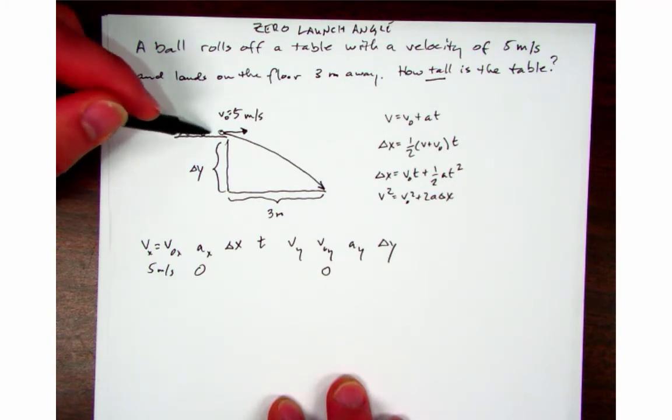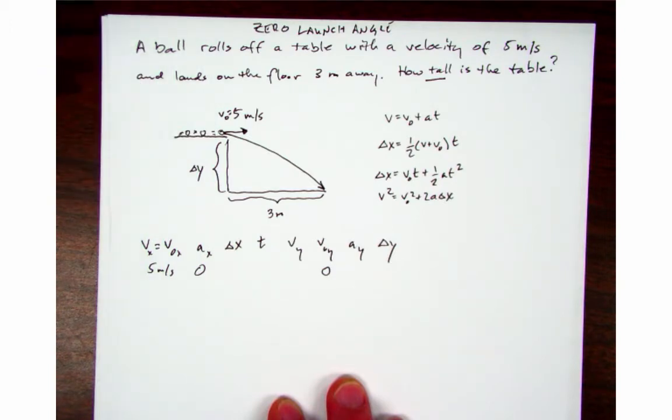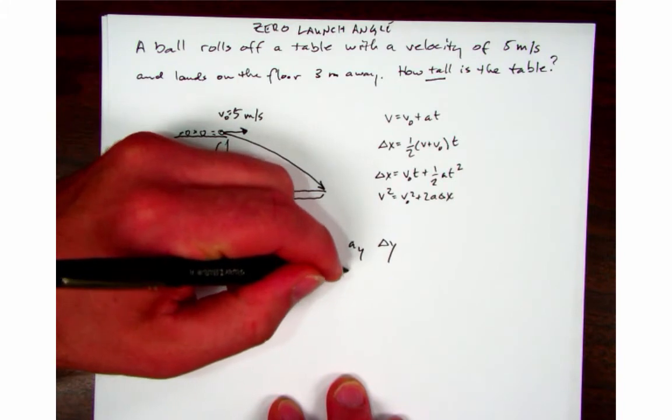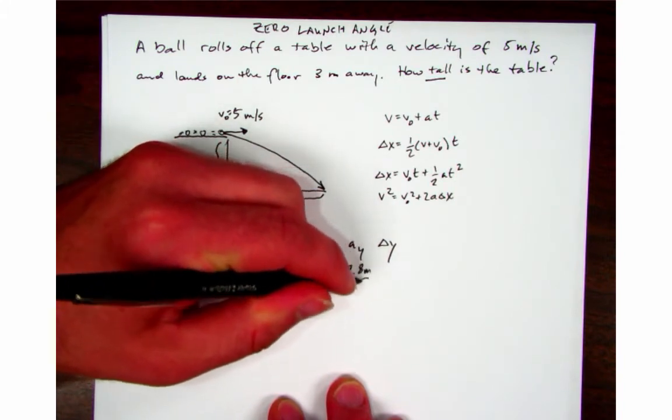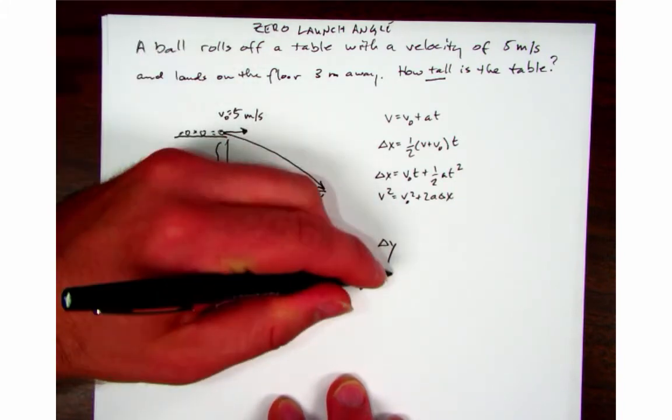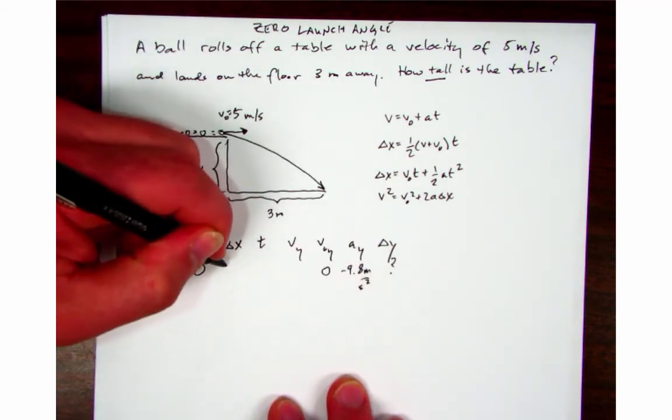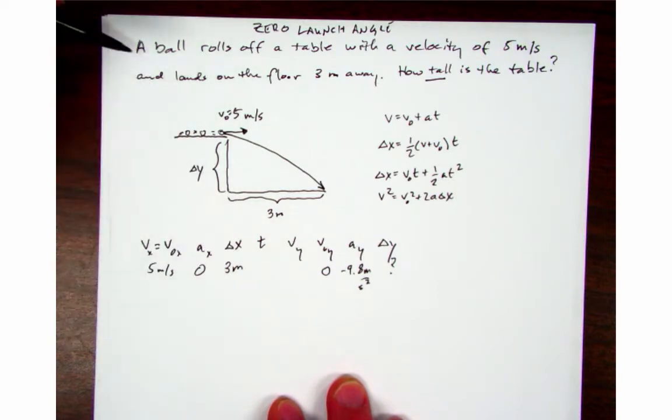The acceleration in the y direction is negative 9.8, and we're looking for delta y, and delta x is three meters.